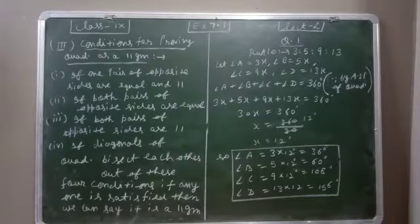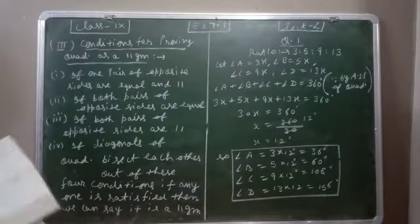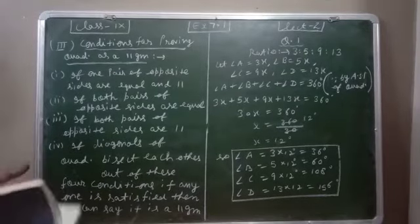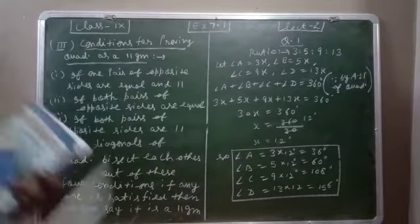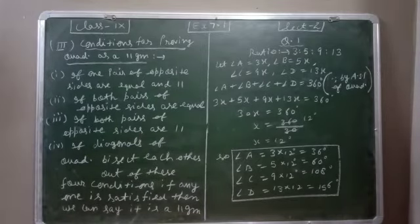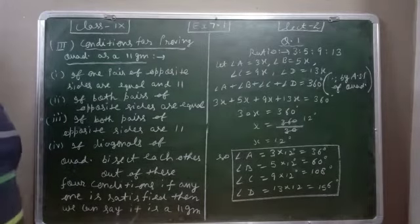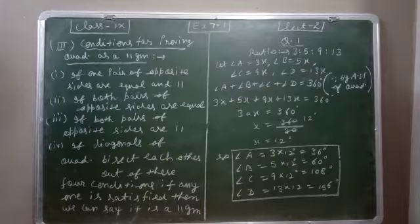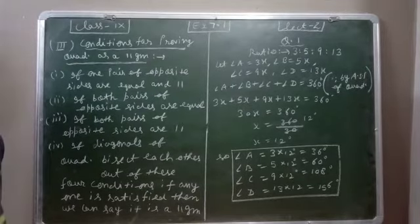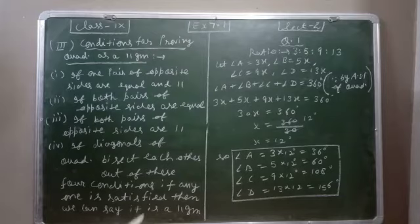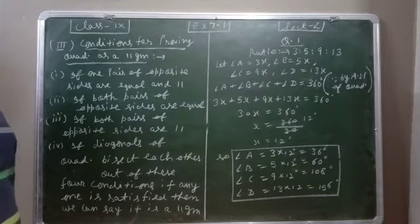Good morning students. Yesterday we discussed some basic points of Chapter 8. The first basic point was the definition of quadrilateral. The second was types of quadrilateral, where we studied the definitions of trapezium, parallelogram, rectangle, rhombus, and square.